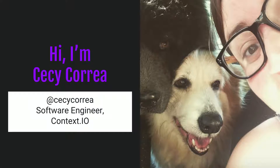My name is Ceci Correa and I'm a software engineer at Context.io. I work on a publicly available API that is essentially an abstraction on top of email. Our API typically deals with millions of messages that we process every month for millions of users, so it's very big data driven.